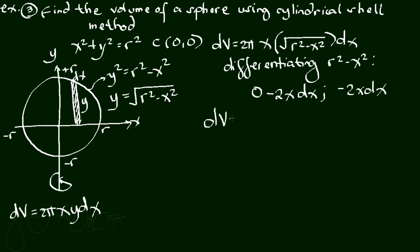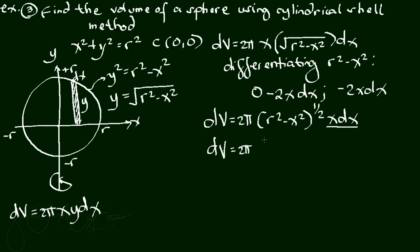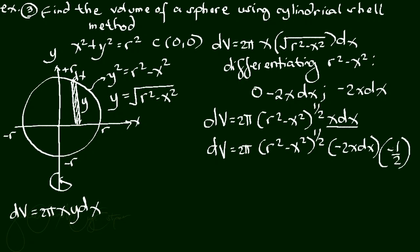Rewriting our formula: dv equals 2 pi times (r squared minus x squared) raised to 1/2 times x dx. Since the differential of the inner term is negative 2x dx, we multiply and divide by negative 1/2 to match. Negative 2 times negative 1/2 equals 1, so it remains the same.